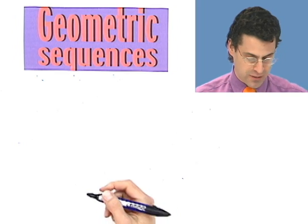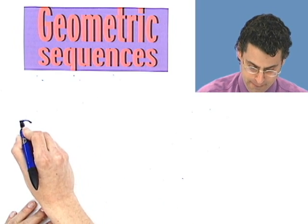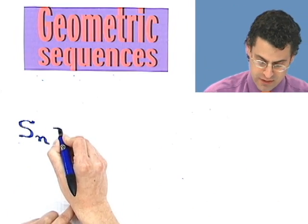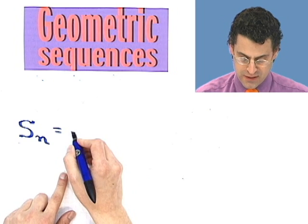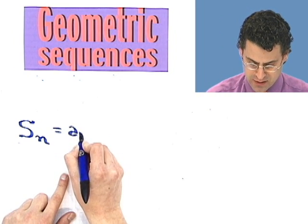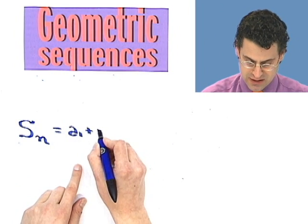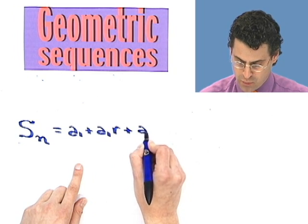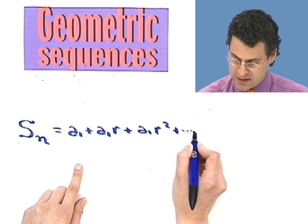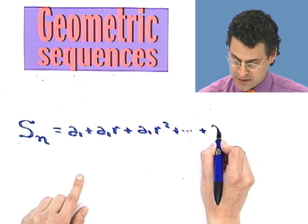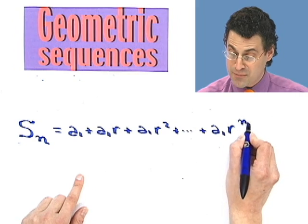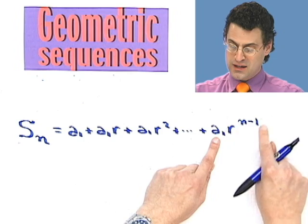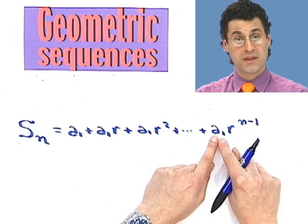Let's write down the first few terms. I'm going to call it s with a subscript n, because I'll put down n terms and add them all up. So s sub n is the sum of n terms, starting with the first one, a1. Then the next term in a geometric sequence would be a1r, then a1r squared, and so on. The last term, since I have n of them, would be a1r to the n minus 1 — that's the nth term formula.